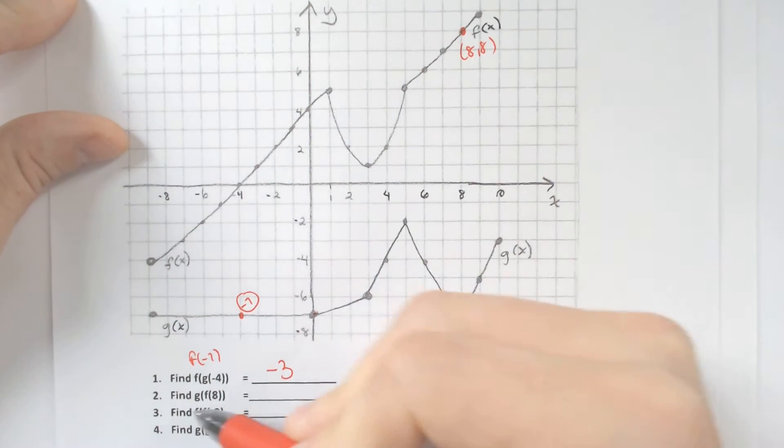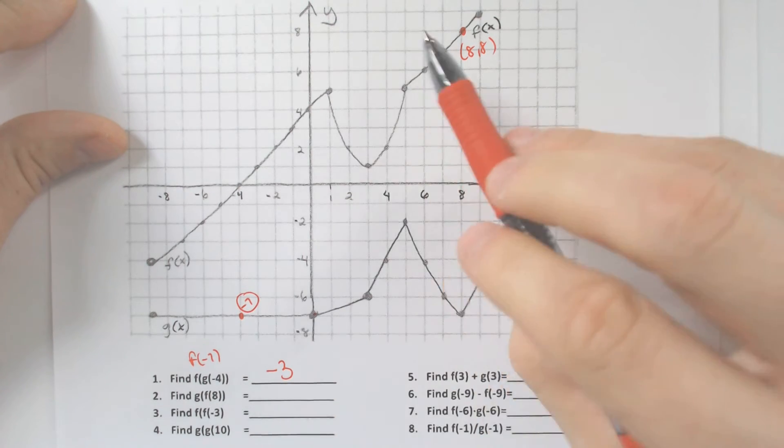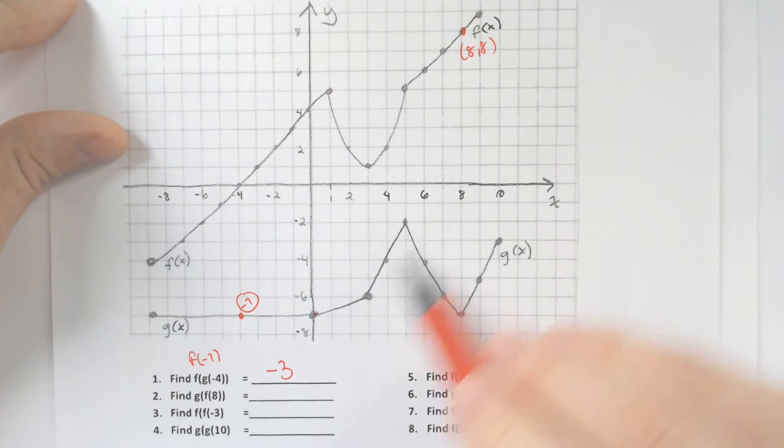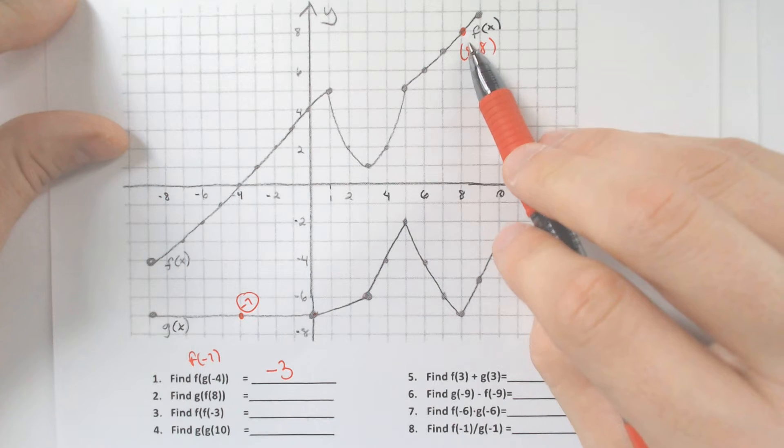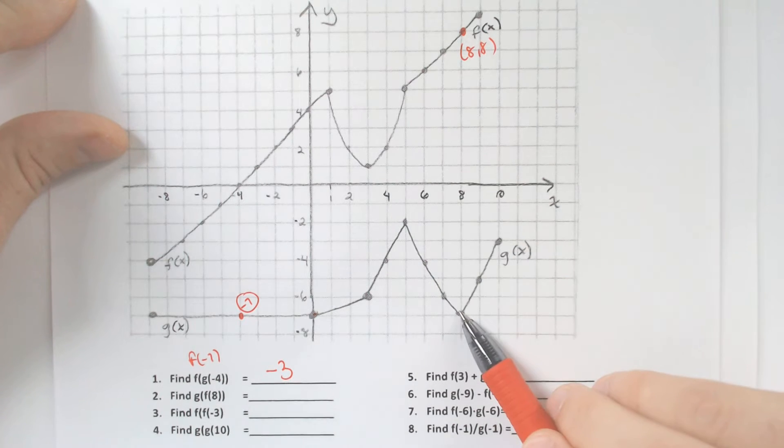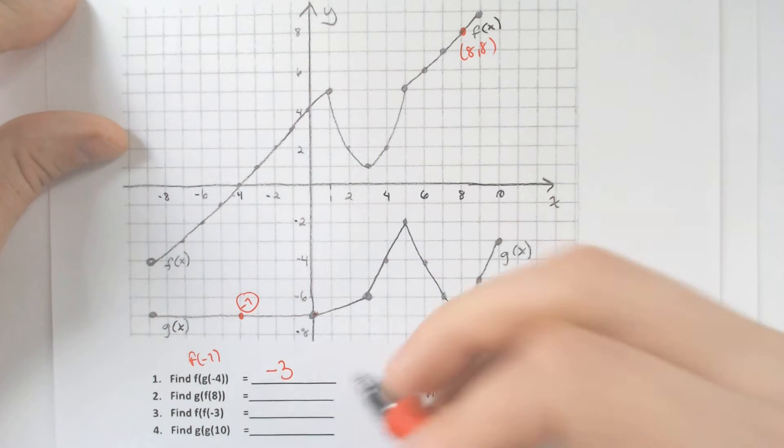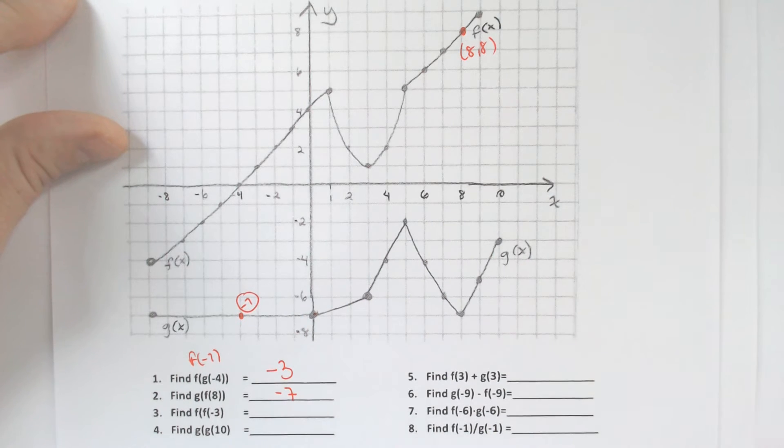So f of 8 is 8, and then we have to find g of 8. So we go back to the 8 because we got 8 for the x value, and it produces negative 7 again. It's getting a little annoying that they're the same numbers, but that's okay.